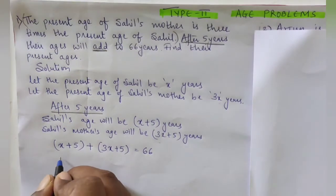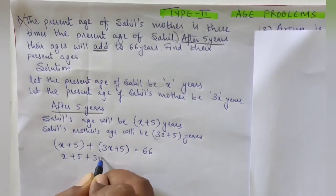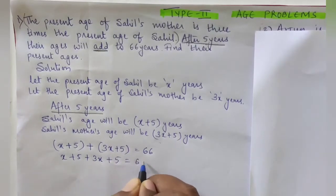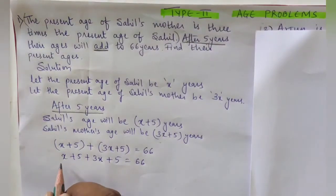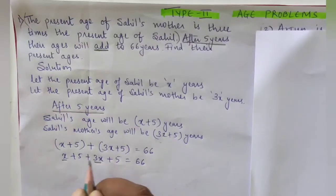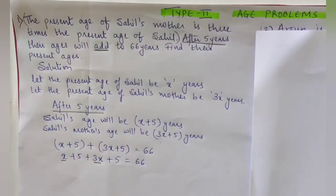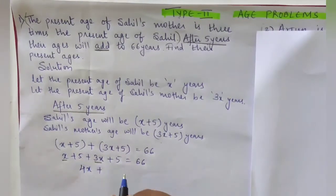Opening the bracket: x + 5 + 3x + 5 = 66. This is the linear equation we have. Here x and 3x are like terms, so we can add them: 3x + 1x = 4x, and 5 + 5 = 10. So we get 4x + 10 = 66.